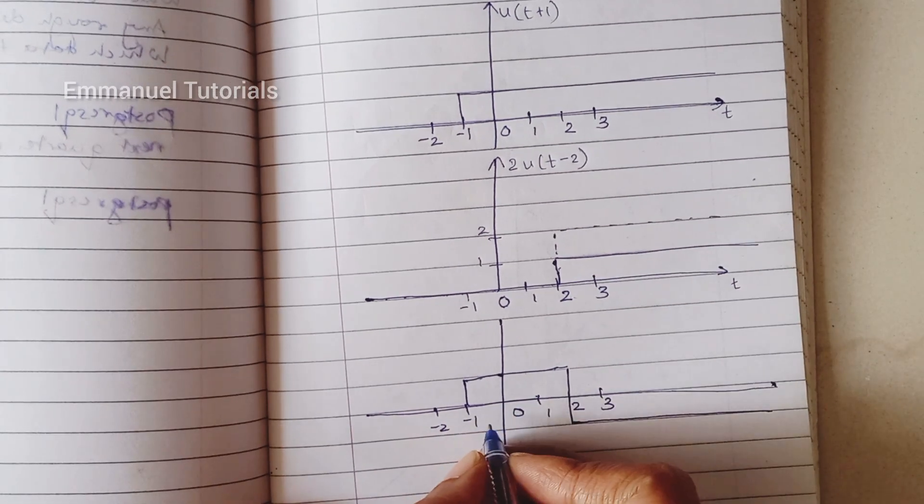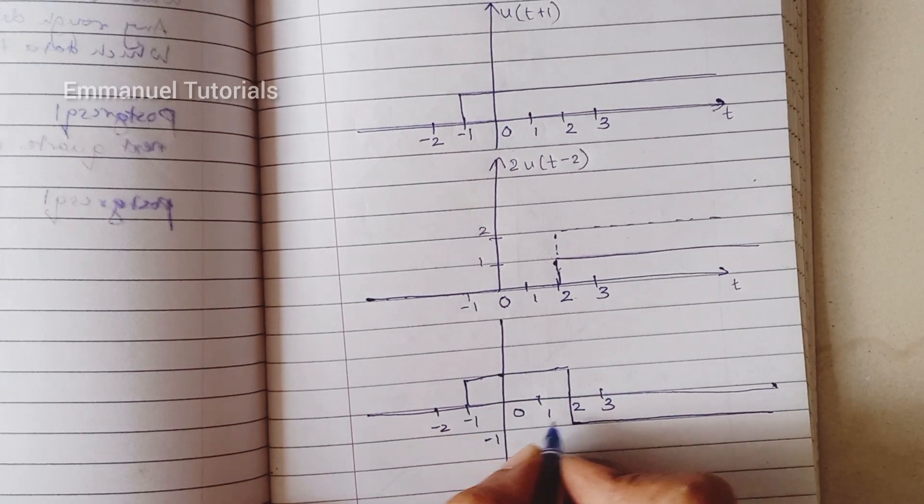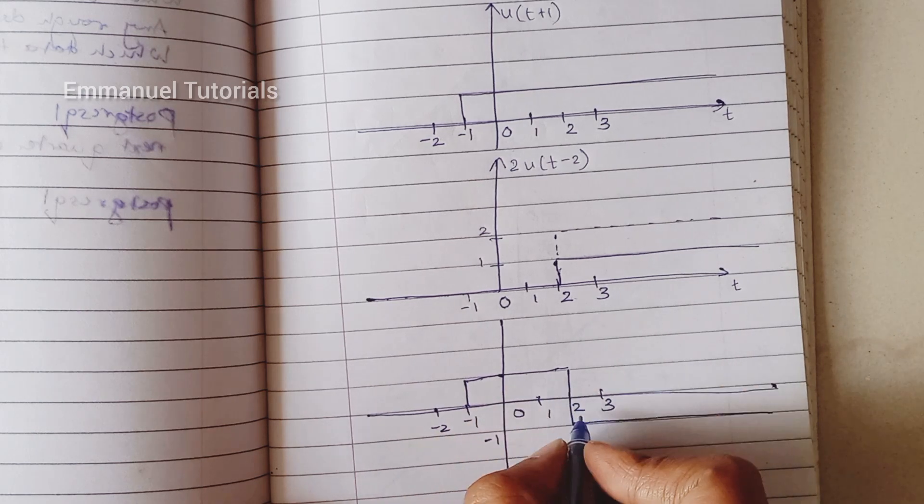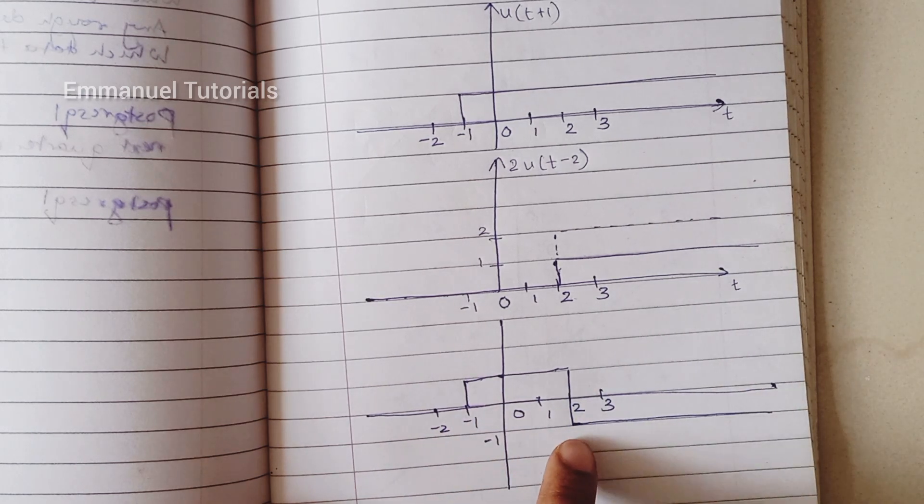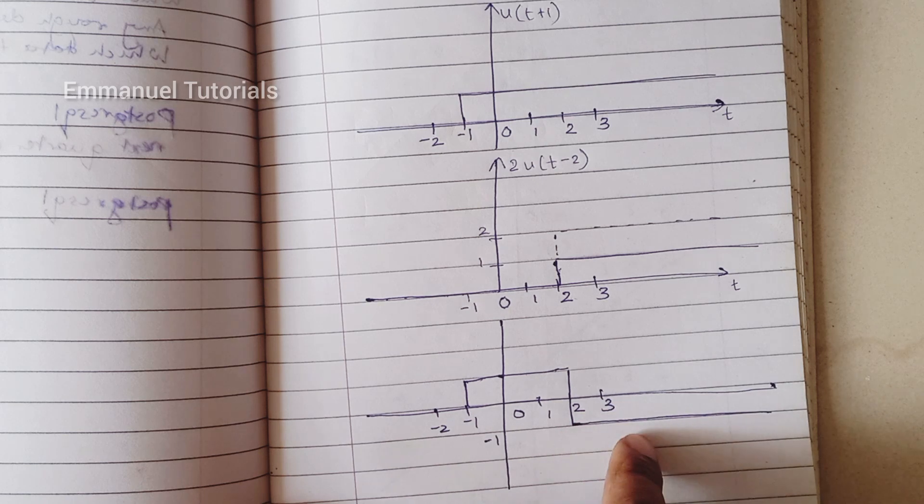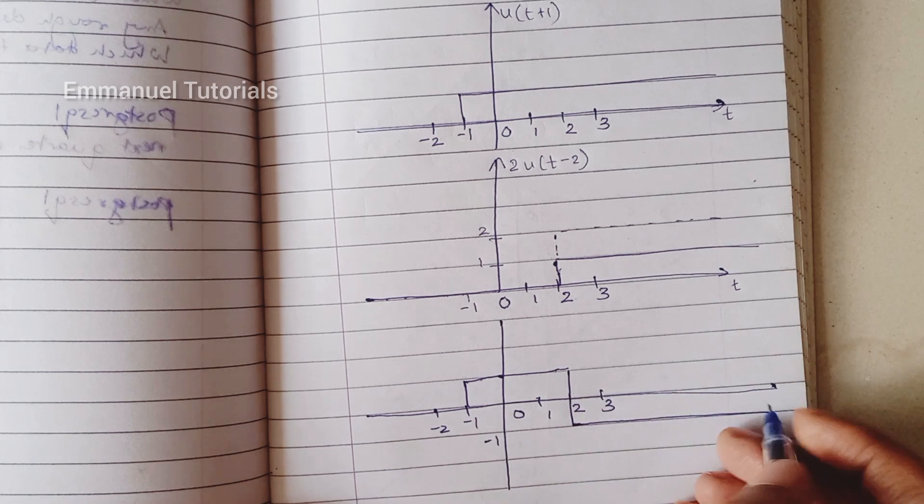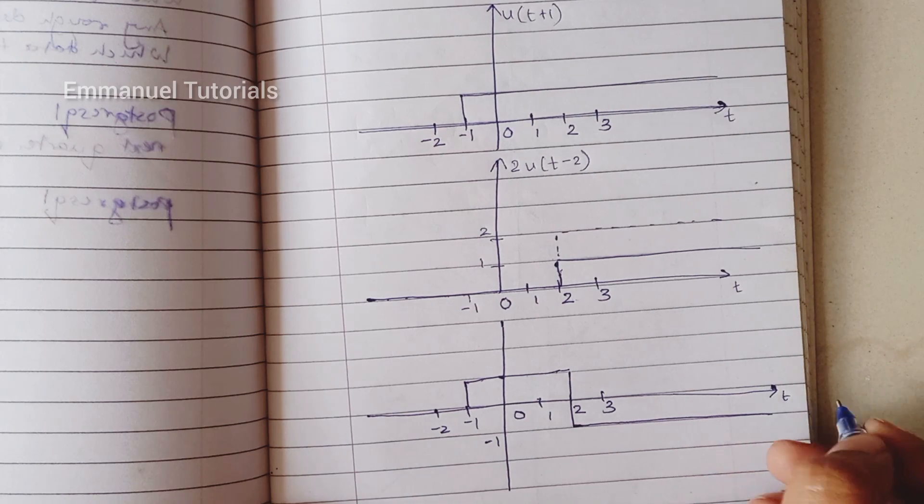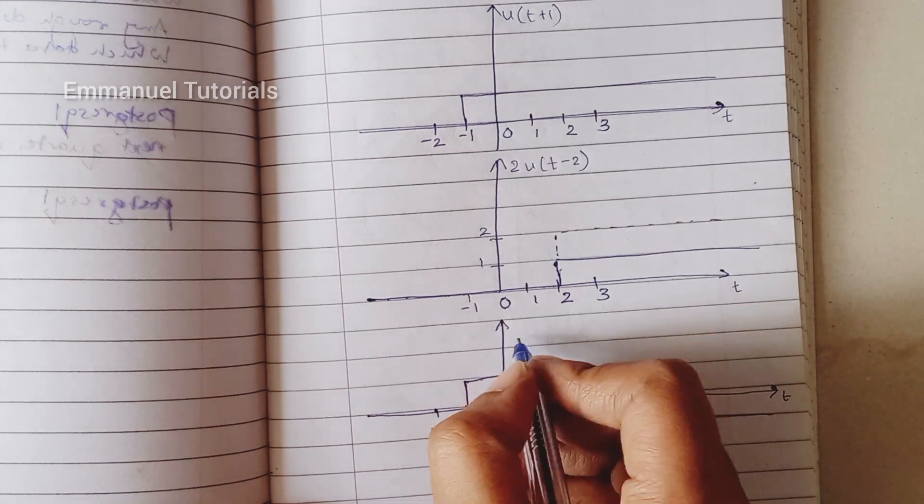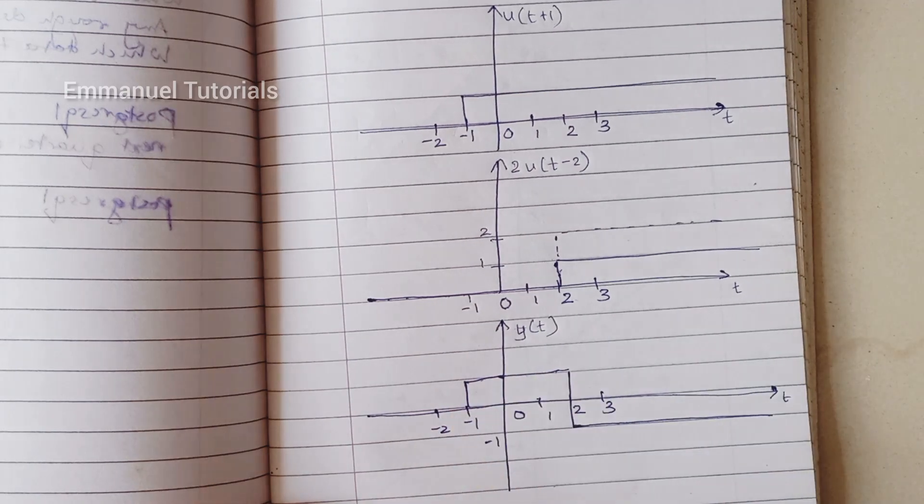So what will be our resultant signal? From minus 1 to 2 it will be a rectangular signal, and from 2 to infinity it's going to be a continuous signal with amplitude minus 1. So this is what we are expecting as the output which is y of t.